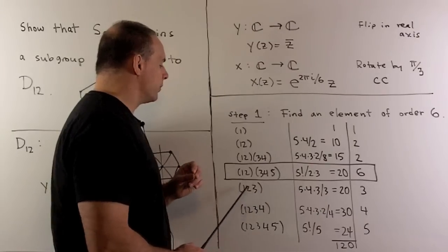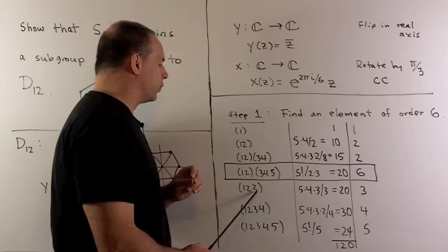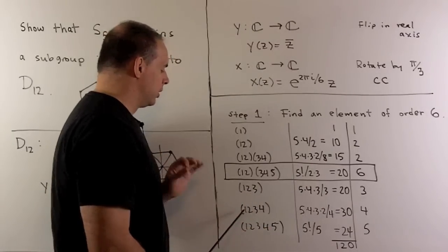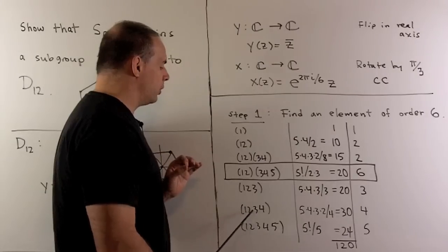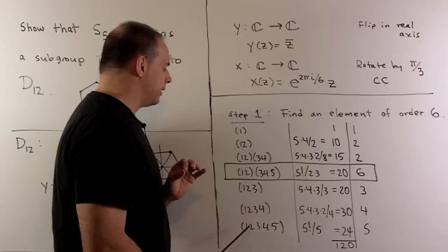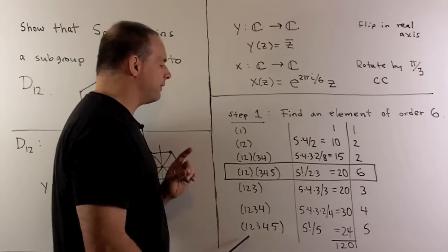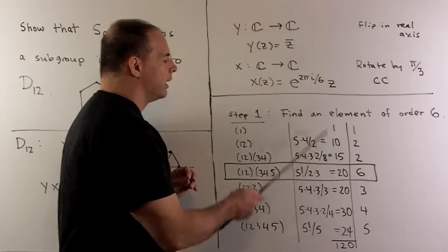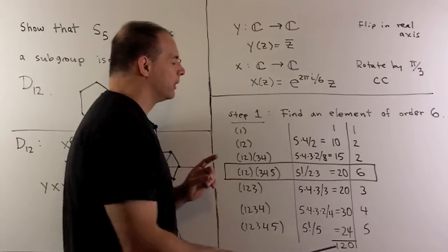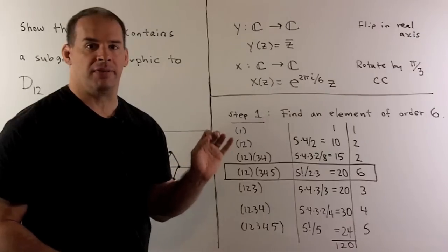For the three cycles, we have 5, 4, 3, divide by three, gives us 20. Five, four, three, two, we divide by four, gives us 30. And then five factorial divided by five gives us 24. Take the sum and I get 120. So we've accounted for all elements of S5.